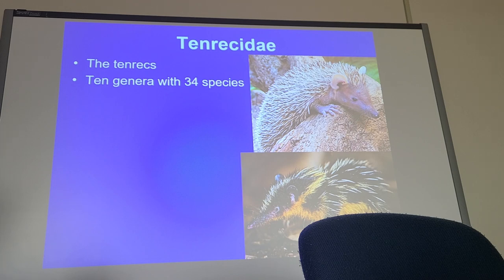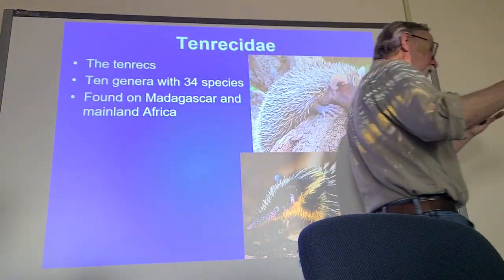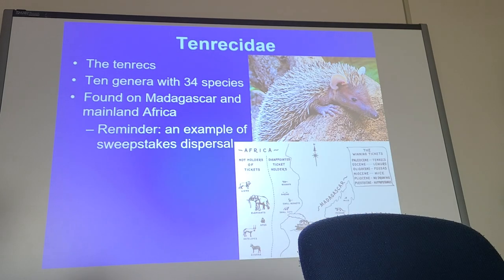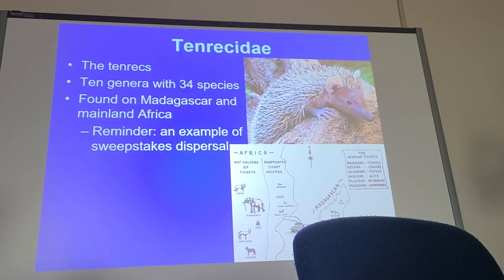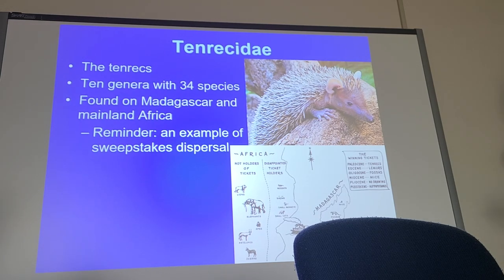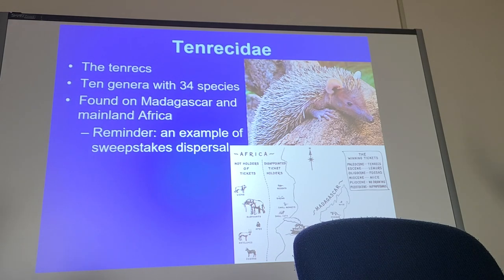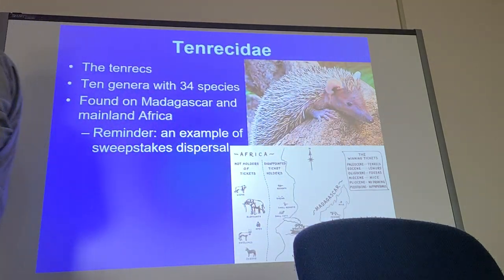Tenrecidae is a small group, not much bigger than the golden moles. Some are found in mainland Africa, but much of their diversity is on Madagascar. Madagascar is interesting from a zoogeographic standpoint — colonization there is primarily through sweepstakes routes. Probably in the Paleocene, the tenrecs made it across, and with Madagascar largely unpopulated, you had speciation and adaptive radiation. We see the same thing in lemurs there.